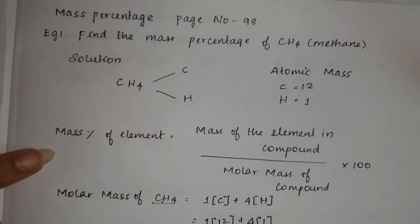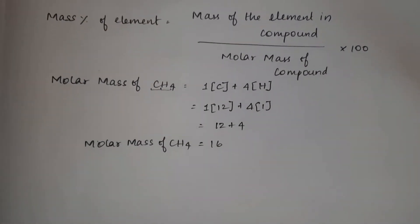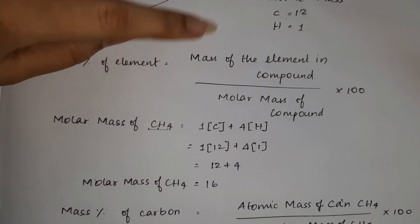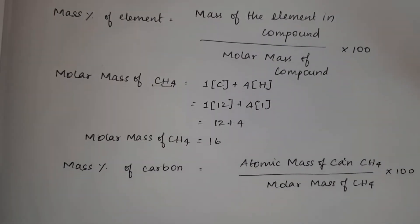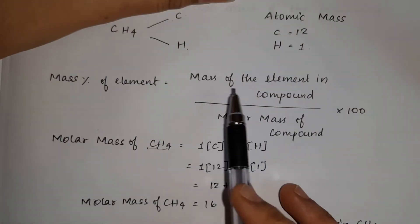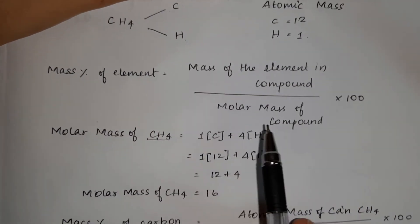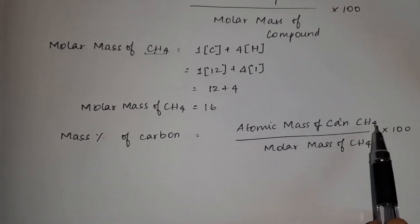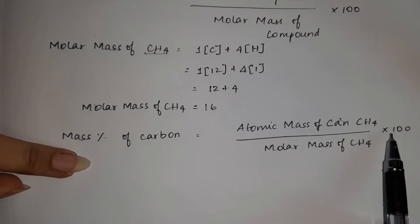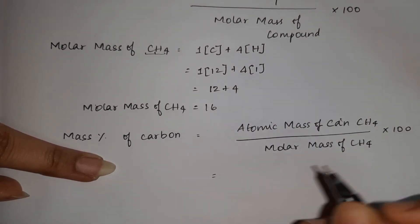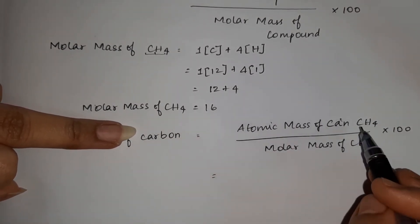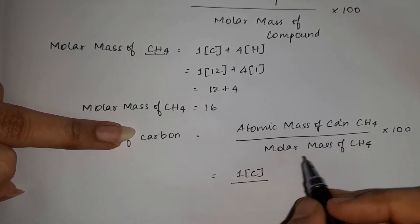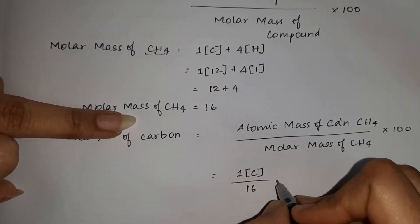Next, we calculate the carbon mass percentage first. Mass percentage of carbon — we will apply the formula. In CH4, carbon atomic mass, we substitute in the numerator, divided by CH4 molecular mass into 100. 1 into C divided by molecular mass of CH4, which is 16, into 100.